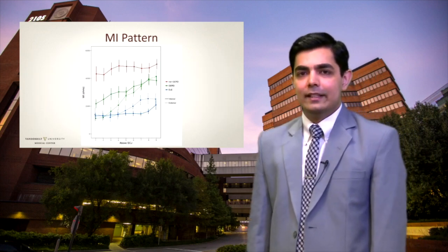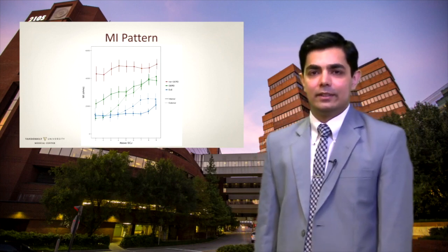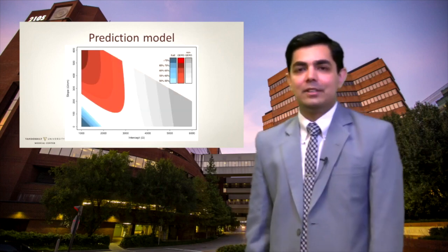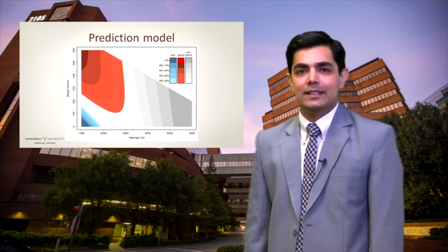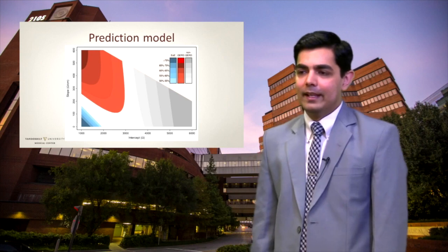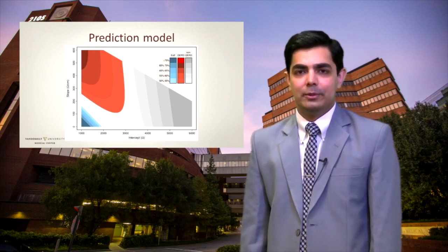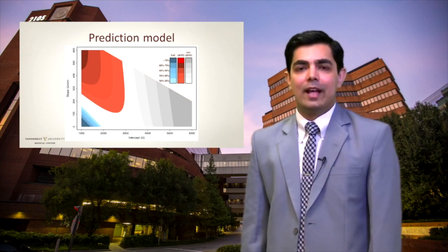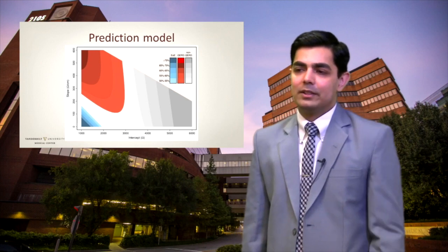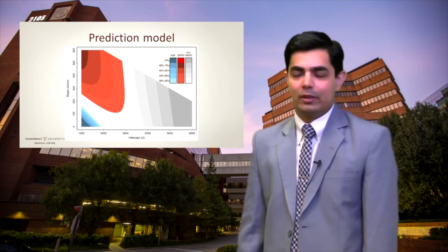We validated this unique MI signature for EOE, GERD, and normal at three other tertiary care medical centers. As seen here, we developed a prediction model using MI measurements that can help clinicians distinguish EOE, GERD, and normal during endoscopy. The x-axis is the intercept while the y-axis is the slope. The intercept is the MI value in the sensor closest to the squamous-columnar junction, while the slope is how fast the MI values rise as you get farther away from the squamous-columnar junction.